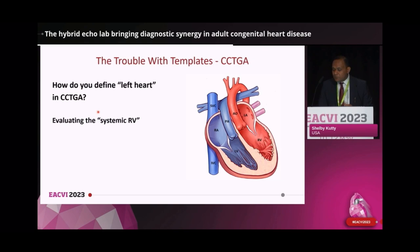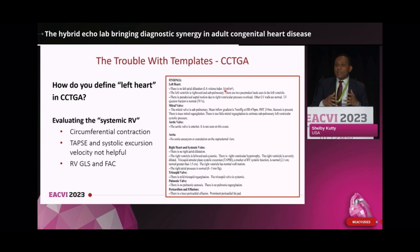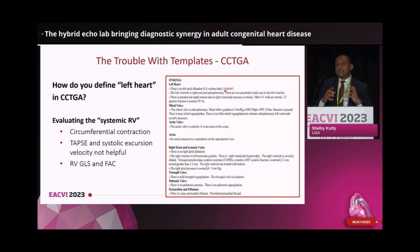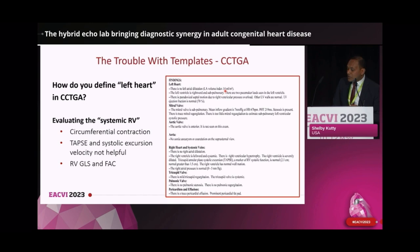We'll have more to say about meaningful reporting of ventricular function in the second example: congenitally corrected transposition. In CCTGA, the left atrium connects to the right ventricle, which connects to the aorta, and the right atrium connects to the left ventricle, which connects to the pulmonary artery. The left ventricle is on the right, and the right ventricle is on the left. So how do we write a report if the template is organized in the usual way, with the left heart entries connecting to the mitral and aortic valves, and the right heart asking about the tricuspid and pulmonary valves? Ventricular function assessment is complicated as well — unlike a sub-pulmonary right ventricle, the systemic RV has a circumferential contraction pattern, rendering established RV quantification techniques like TAPSE and systolic excursion velocity unhelpful. Here, RV longitudinal strain and fractional area change (FAC) are more suitable. This problem is not unique to CCTGA — atrial baffling procedures for standard transposition also result in the systemic right ventricle.